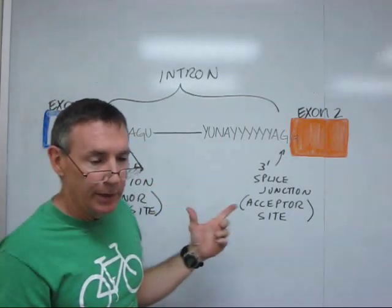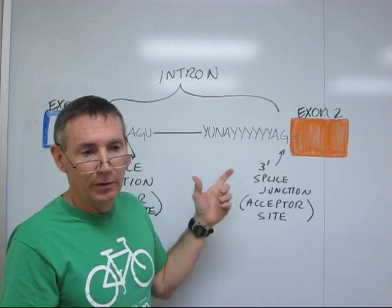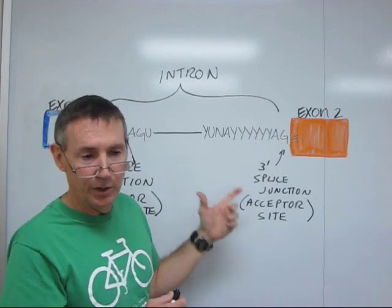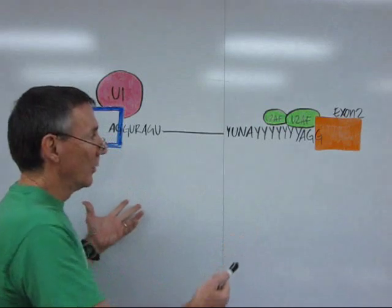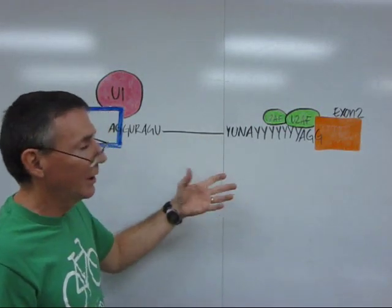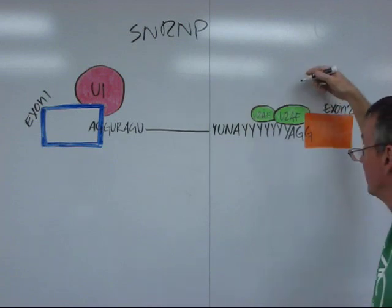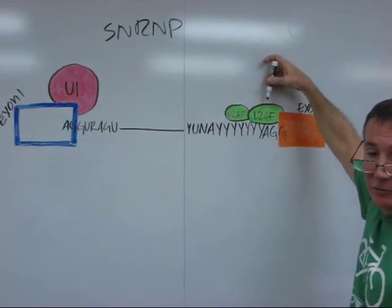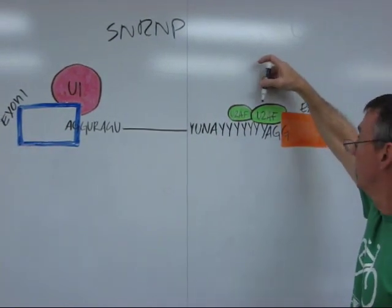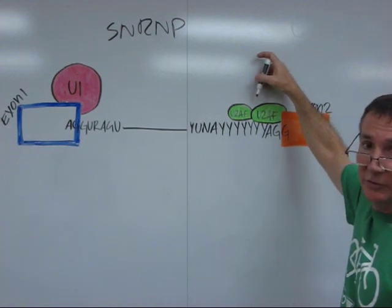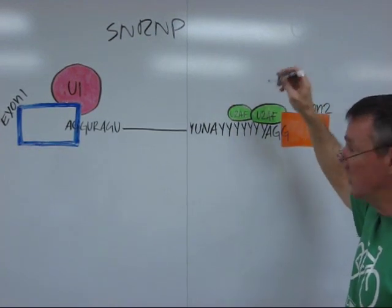The next thing we're going to look at, then, is the assembly of the spliceosome, which is the complex that removes the intron. Now, here we have the consensus intron again. The first thing to bind to begin the process of splicing are the U2AFs. U2AFs are proteins. U2AF stands for U2 accessory factors. We'll talk about U2 in a second.